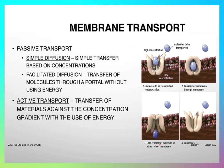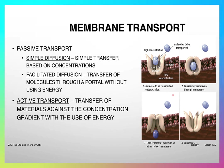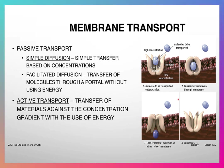The third type is called active transport. Active transport occurs when materials are transferred against the concentration gradient by using energy. A carrier takes up the molecule, captures it, moves it through the membrane, and releases it on the other side. If this process uses energy to accomplish this, it's called active transport.